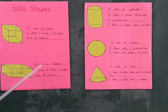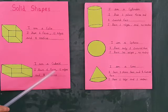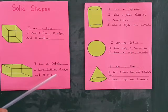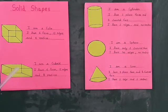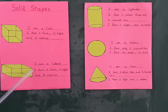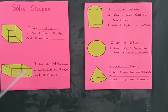Second is cuboid. I am a cuboid. I have 6 faces, 12 edges and 8 vertices. It has 6 faces: 1, 2, 3, 4, 5 and 6.